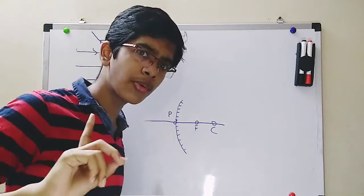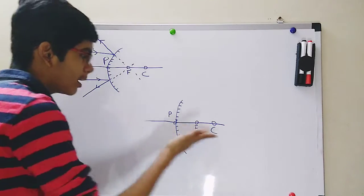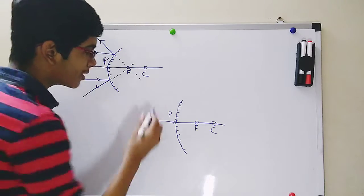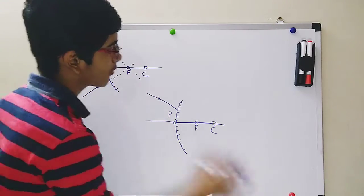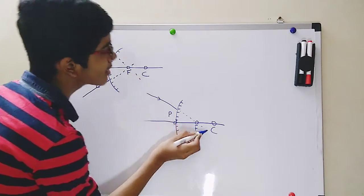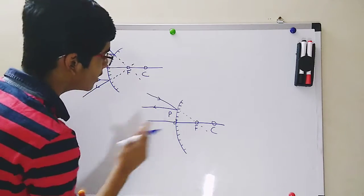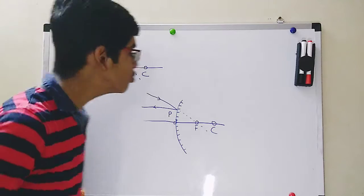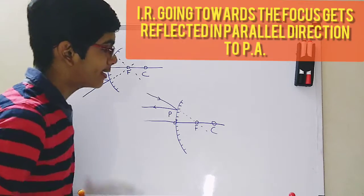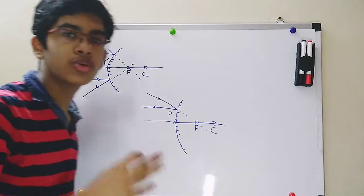Rule number two was the opposite of rule number one: all the light rays passing through the focus will get reflected in a direction parallel to the principal axis. For a convex mirror, we can't draw a light ray actually passing through the virtual focus. But if a light ray, when extended backward, meets at the focus, then it will get reflected parallel to the principal axis. So rule number two for a convex mirror is: all the light rays going towards the focus will get reflected parallel to the principal axis.